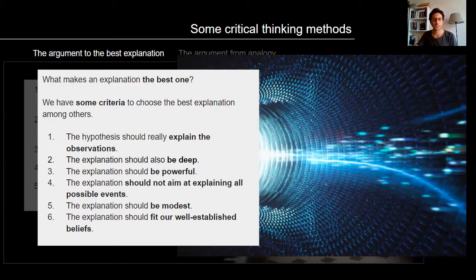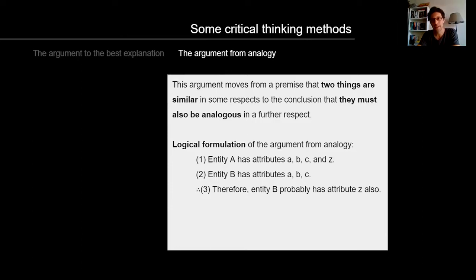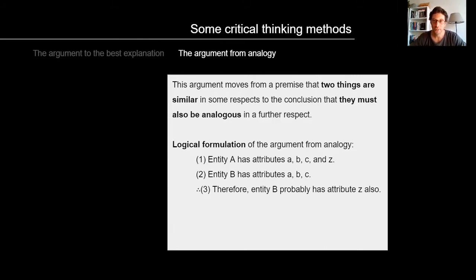Now the second method: argument from analogy. This argument moves from a premise that two things are similar in some respect to the conclusion that they must also be analogous in a further respect. The logical formulation: entity A has attributes A, B, C, and Z; entity B has attributes A, B, and C. Therefore, entity B probably has attribute Z also. The three dots to the left of number three means 'therefore' in logical formalization.